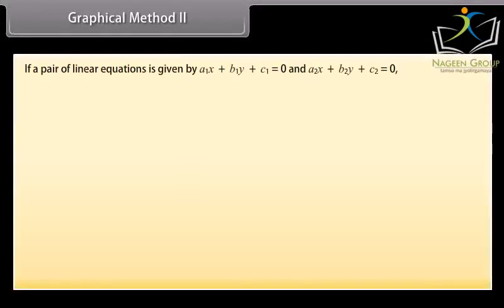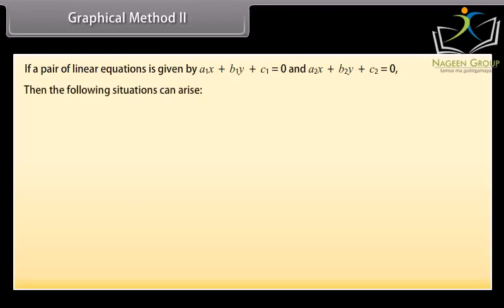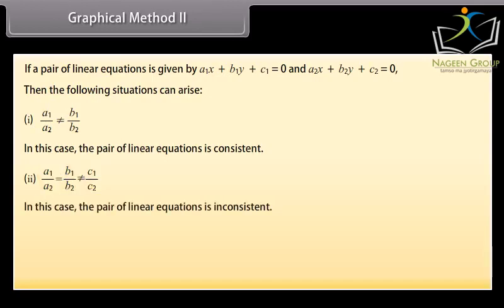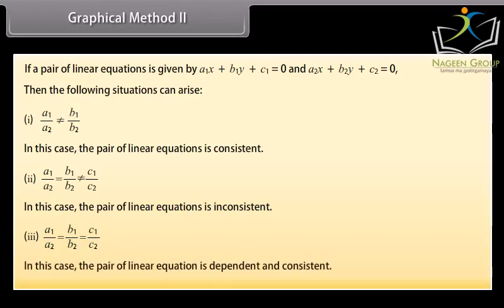If a pair of linear equations is given by a1x + b1y + c1 = 0 and a2x + b2y + c2 = 0, then: (1) if a1/a2 ≠ b1/b2, the pair is consistent; (2) if a1/a2 = b1/b2 ≠ c1/c2, the pair is inconsistent; (3) if a1/a2 = b1/b2 = c1/c2, the pair is dependent and consistent.